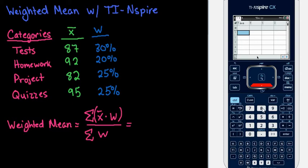And then I'm going to put in my values. So my average values are I have an 87, a 92, an 82, and a 95.